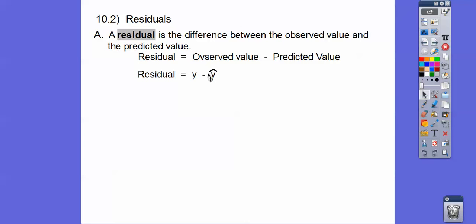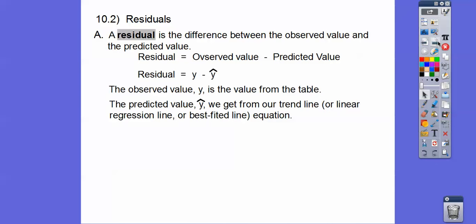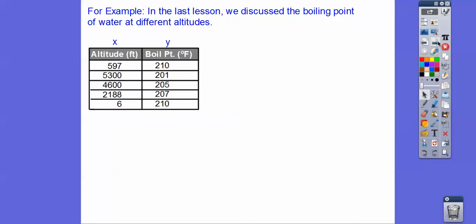So your book doesn't use this y-hat, but it just makes it easier. The y-hat is going to be our predicted value. So the observed value — the y — is the value that's usually given in the table. And the predicted values we get from our trend line, or linear regression line, or best fitted line — the equation that we got in the last lesson.